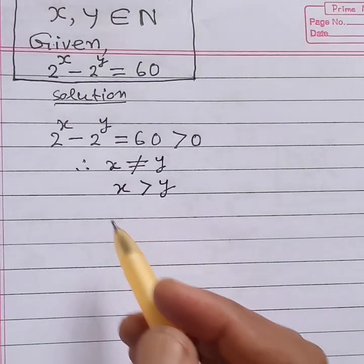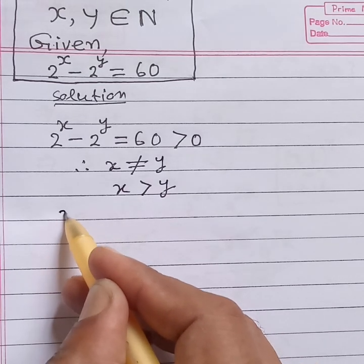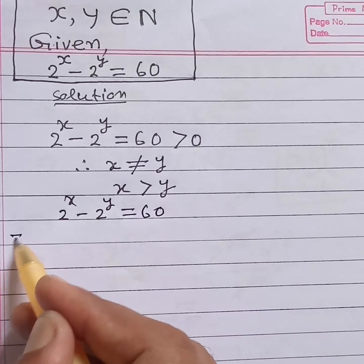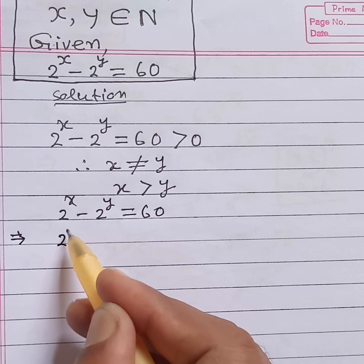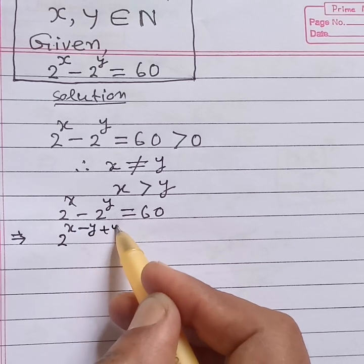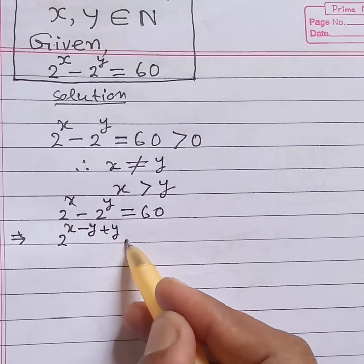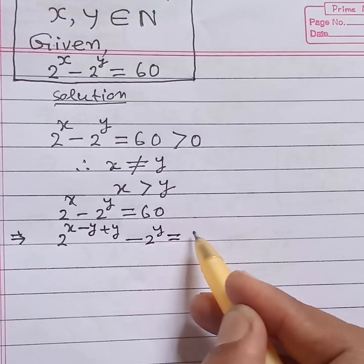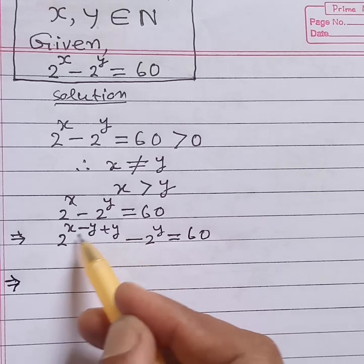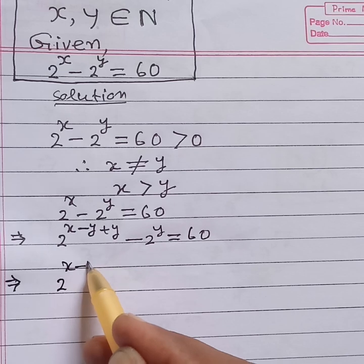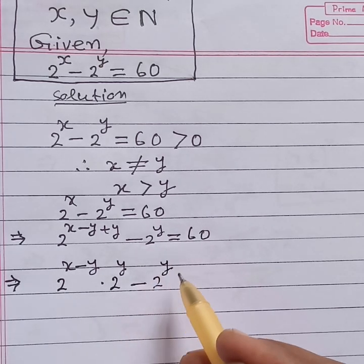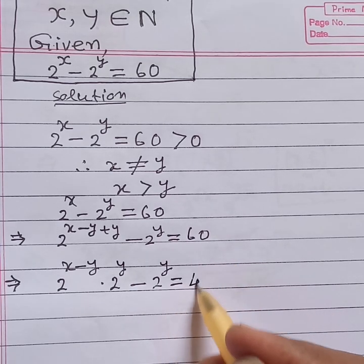Now, from the equation, 2 to the power x minus 2 to the power y is equal to 60. This implies 2 to the power x minus y plus y, minus 2 to the power y is equal to 60. According to the laws of indices, this can be written as 2 to the power (x minus y) into 2 to the power y.